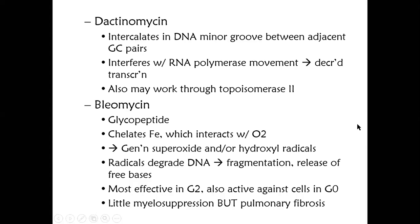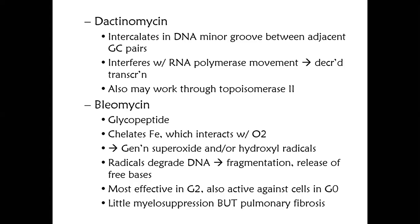Bleomycin has a very complex structure — your teacher would recommend not spending too much time on it. These are glycopeptide antibiotics. Bleomycin chelates with iron (Fe) and interacts with O2, generating superoxide and hydroxyl free radicals. These free radicals degrade and fragment the DNA, so the cell cannot divide. It is most effective in G2 phase and causes little myelosuppression. However, pulmonary fibrosis is the main and typical side effect of bleomycin.